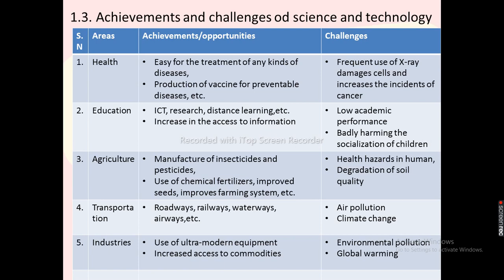Achievements and challenges of science and technology. In the area of health, achievements include easy treatment of many kinds of diseases. Challenges include production of medications for preventable diseases, frequent use of certain substances that damage cells, and increased incidence of cancer.